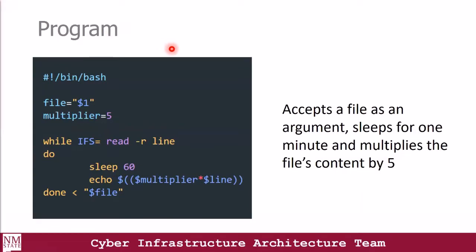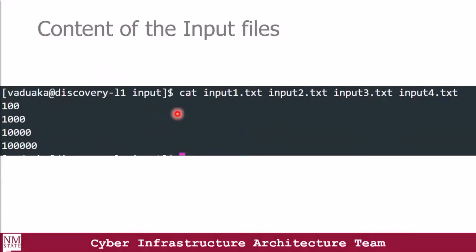This is my bash file, which is a program that processes the input data files I have. Basically, I am taking my input files as arguments, multiplying the content of my input files by five, looping through it, sleeping for one minute, and then echoing the results to the output file. Next I am showing the output of all the input files — we can see the content of input one, two, three, and four.